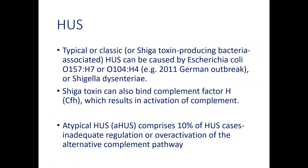Coming to the second flagship disease — hemolytic uremic syndrome. If it occurs due to Shiga toxin-producing bacteria, we call it typical or classical HUS. It is caused by E. coli strains O157:H7 or O104:H4, or Shigella dysenteriae. Shiga toxin can also bind complement factor H and results in activation of complement. If not due to Shiga toxin, it is categorized as atypical HUS, which comprises 10% of total cases, occurring due to inadequate regulation or overactivation of the alternate complement pathway.